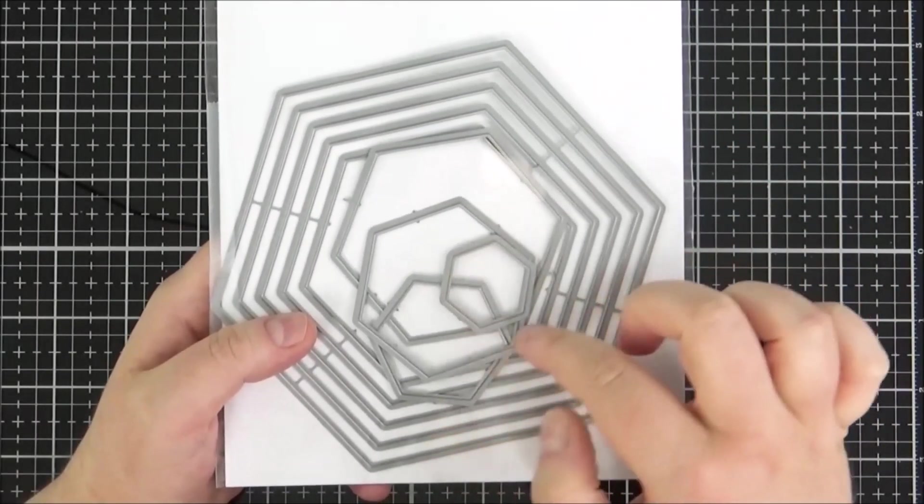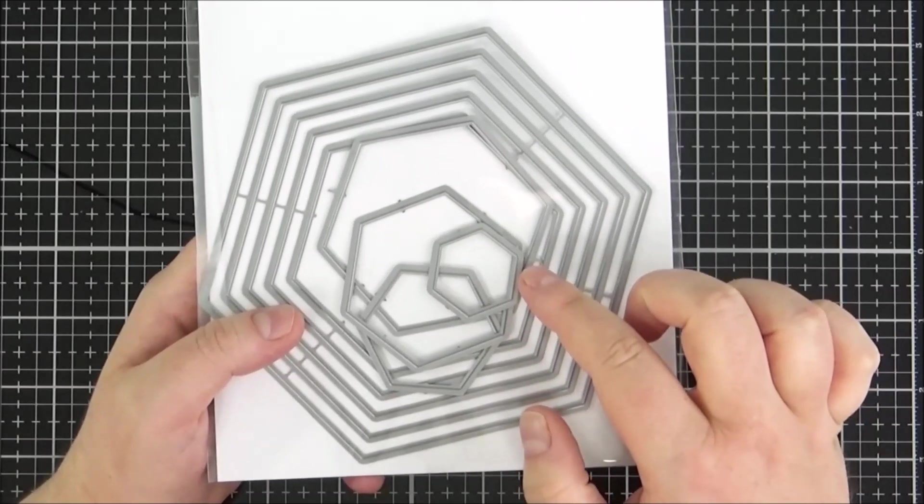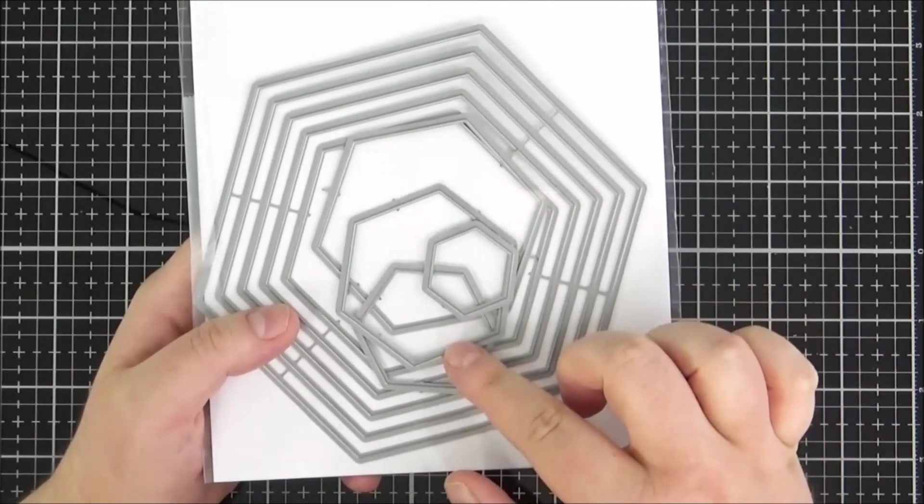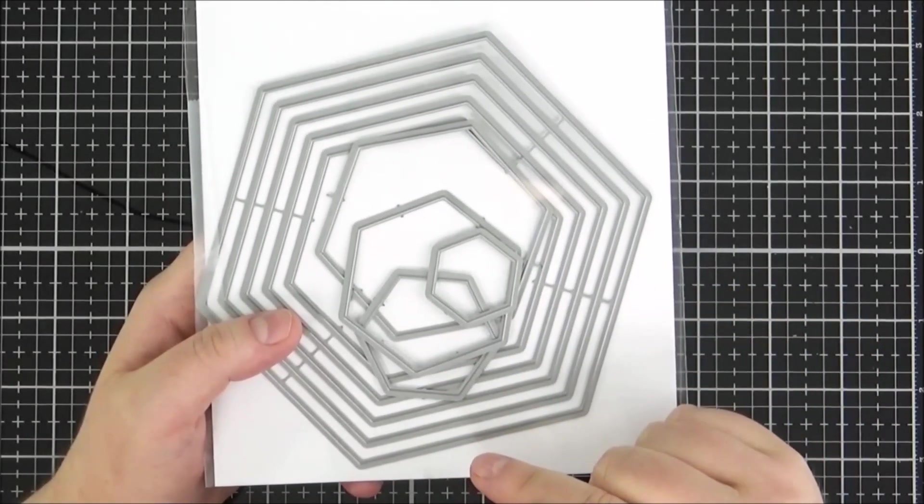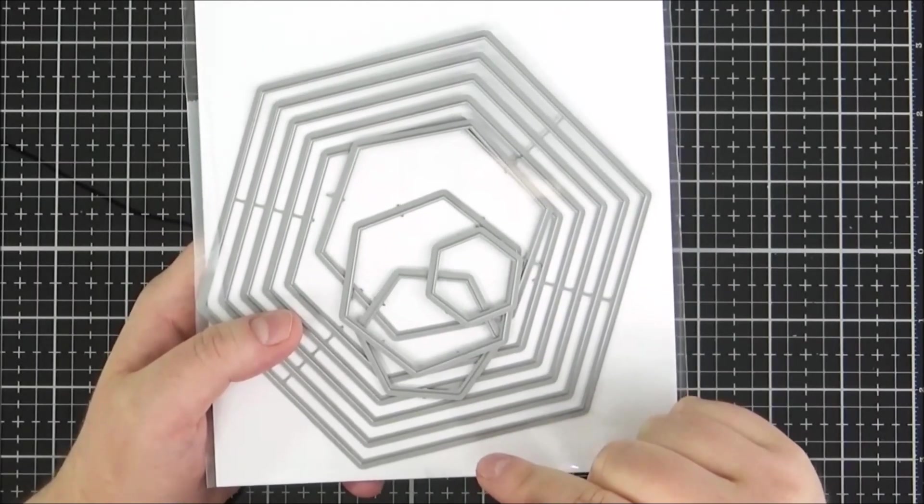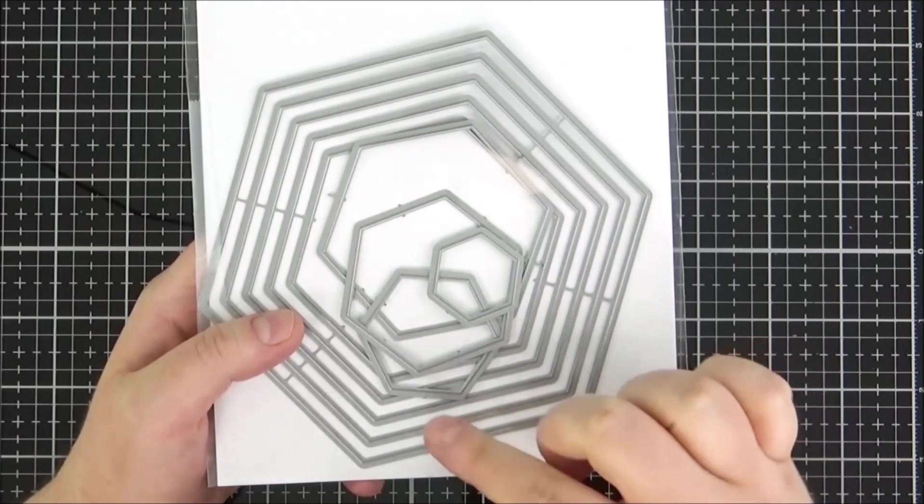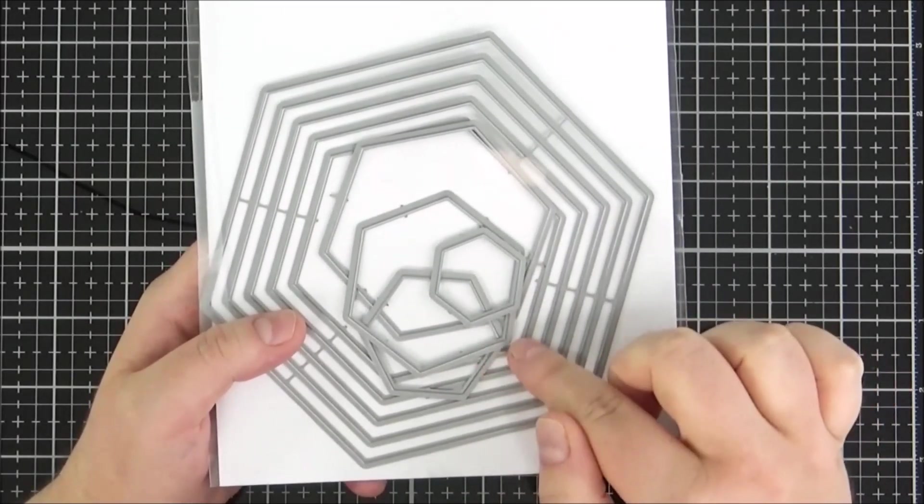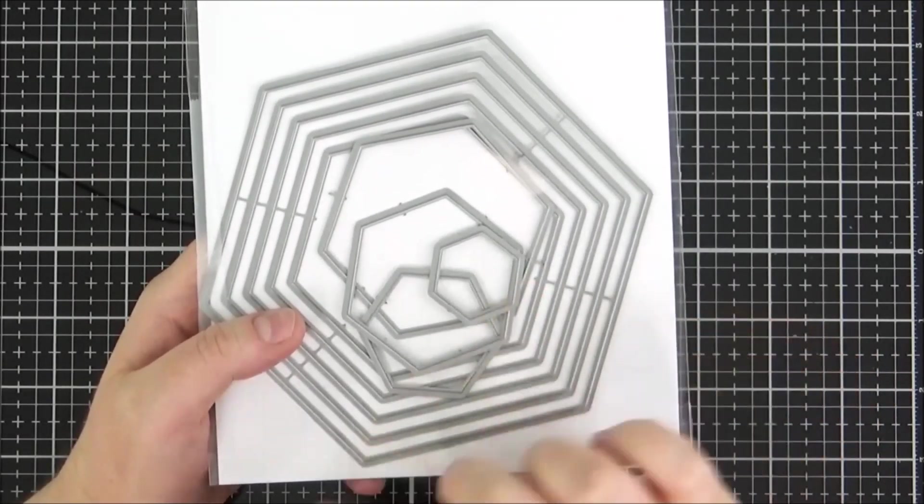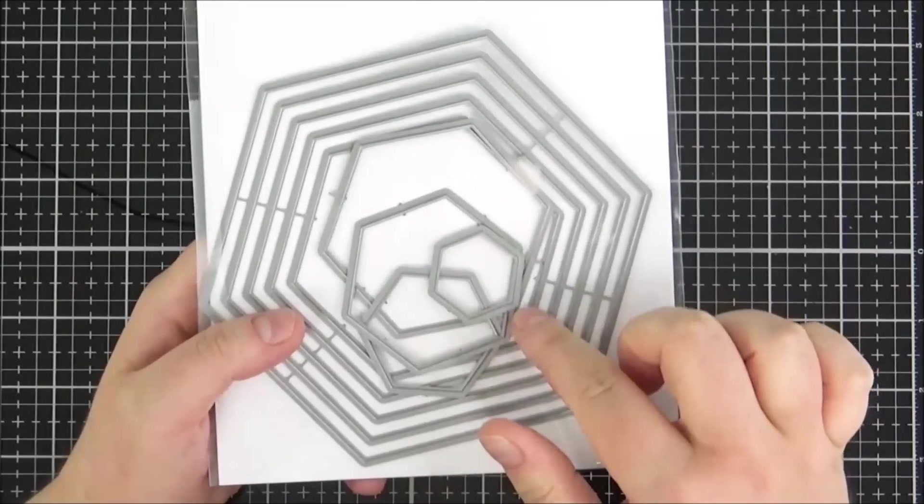And so I really enjoyed using them. I think that they work quite nicely as windows. I used them as windows on a card for my Clearly Besotted release card back at the end for the July release so at the end of June and I really liked them for the windows but I thought that they would work quite nicely with that bee set as well with the little hexagons.